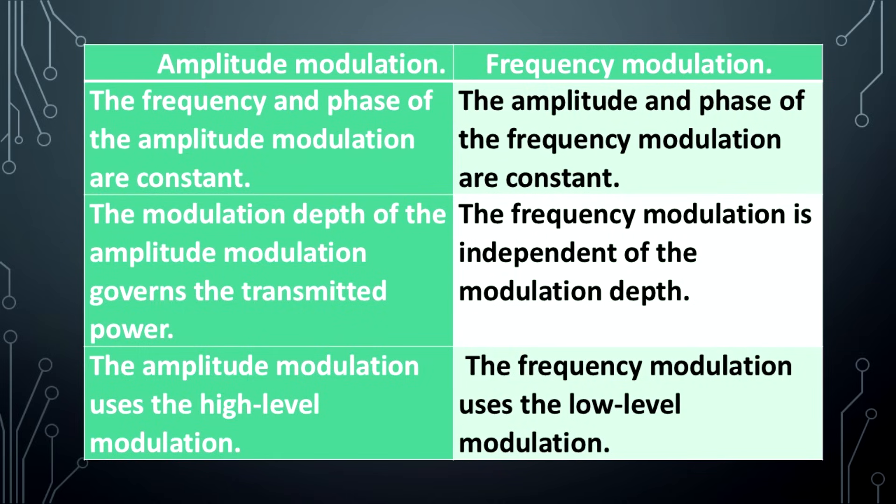Differences between amplitude modulation and frequency modulation. The frequency and phase of amplitude modulation are constant. The amplitude and phase of frequency modulation are constant. The modulation depth of amplitude modulation governs the transmitted power. Frequency modulation is independent of the modulation depth. Amplitude modulation uses high-level modulation; frequency modulation uses low-level modulation.